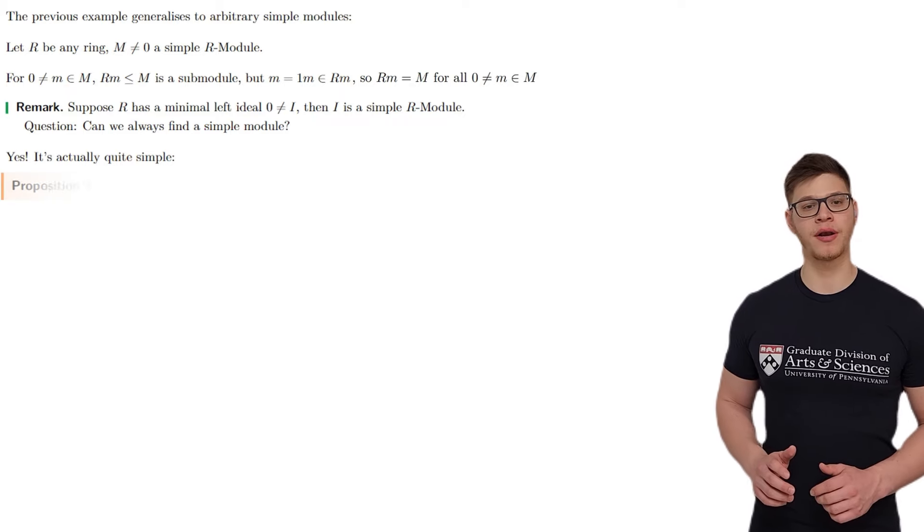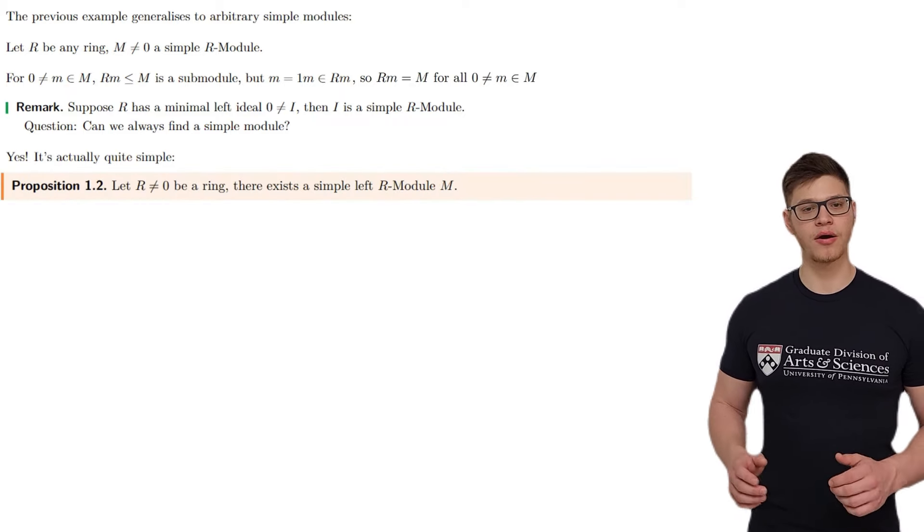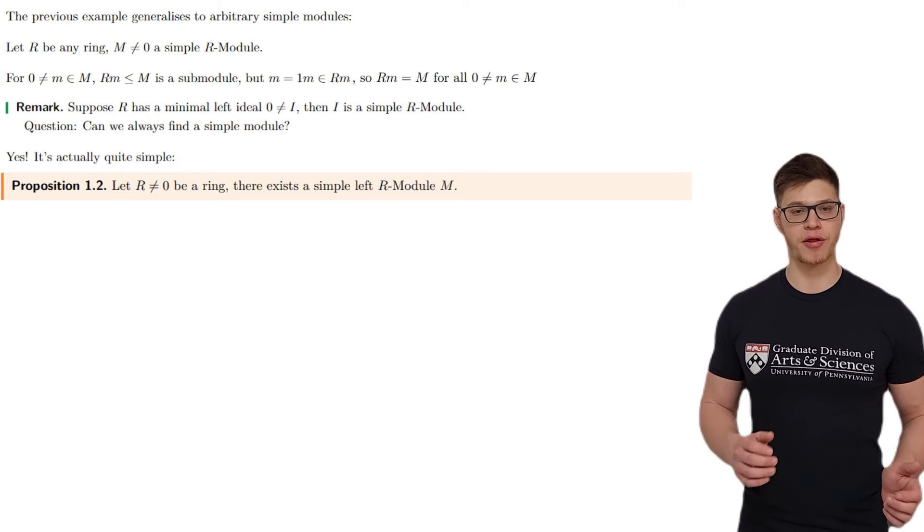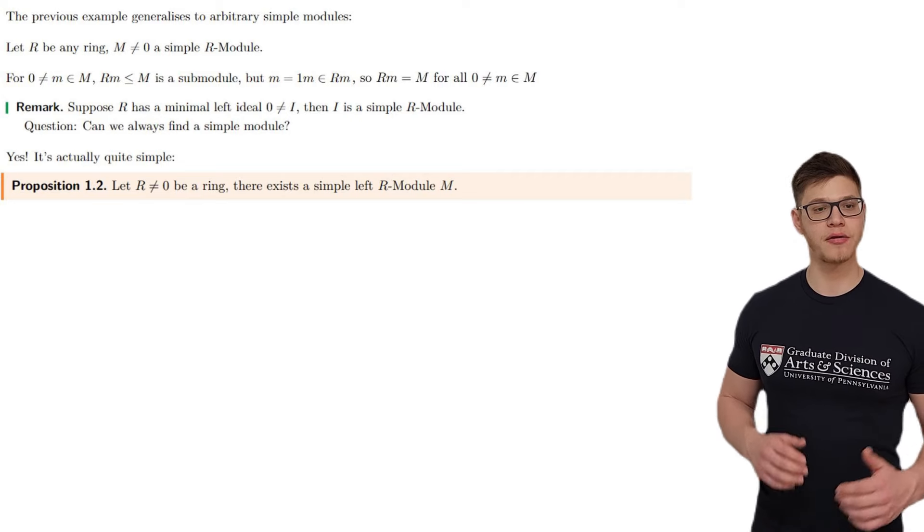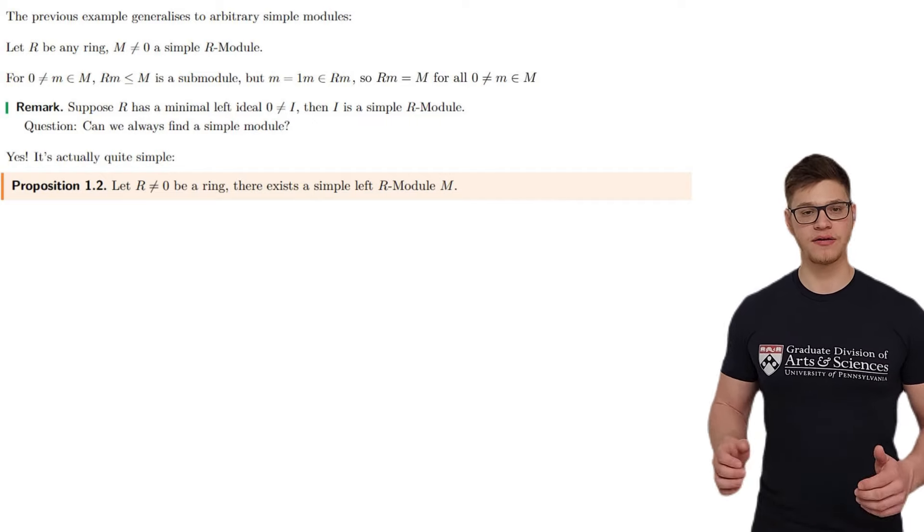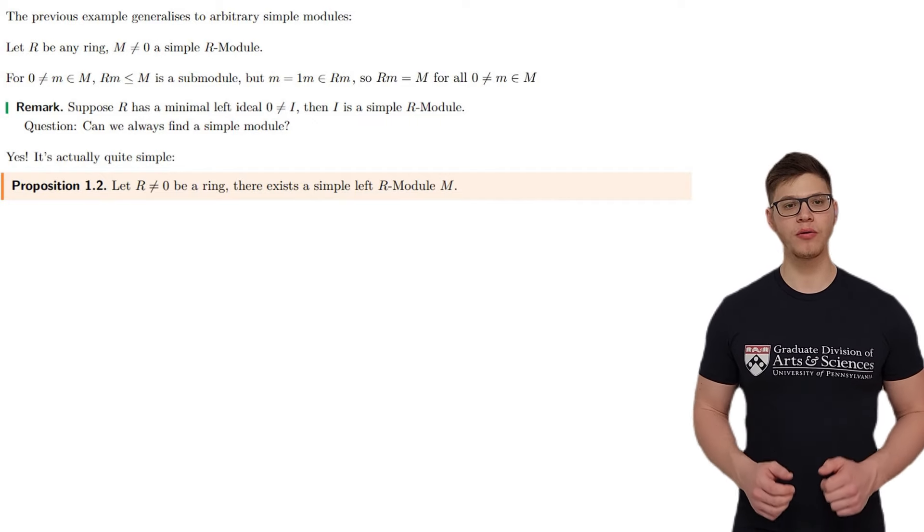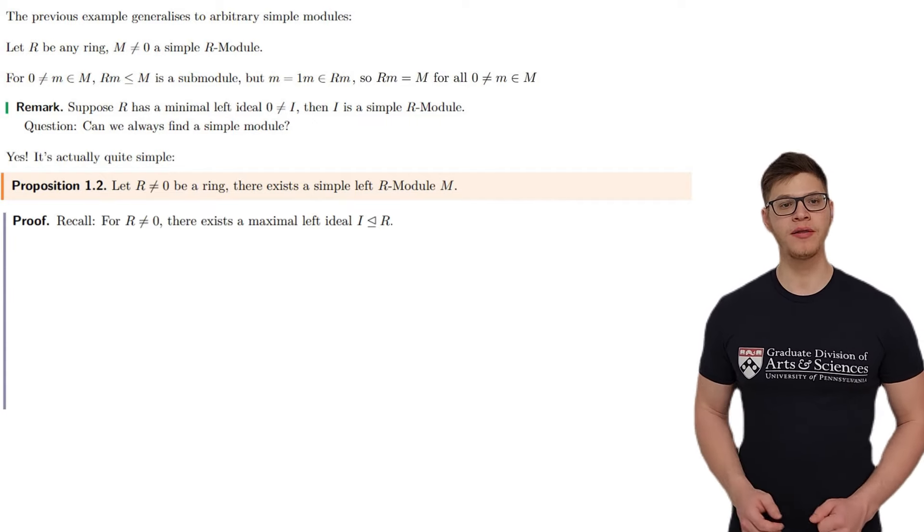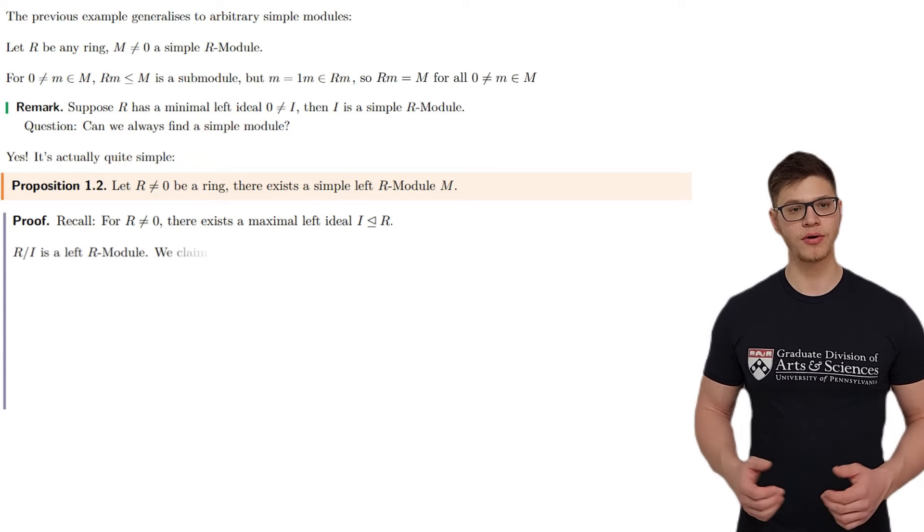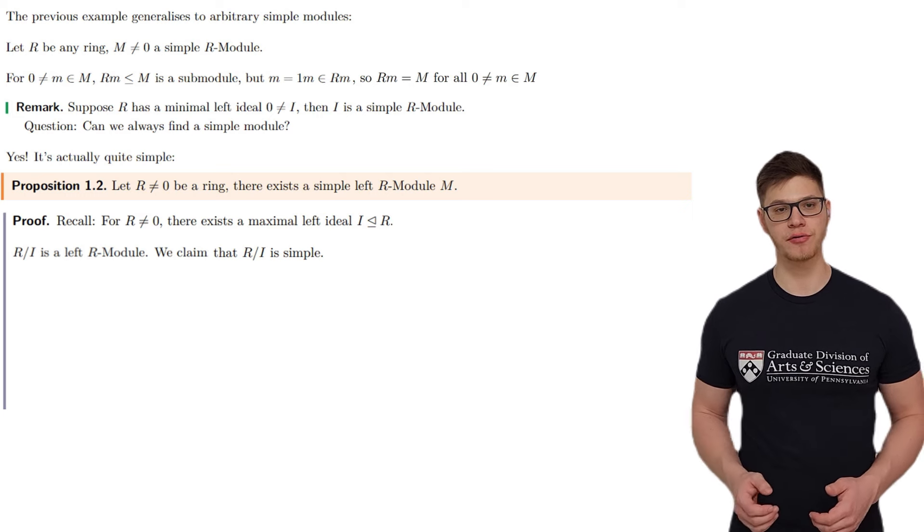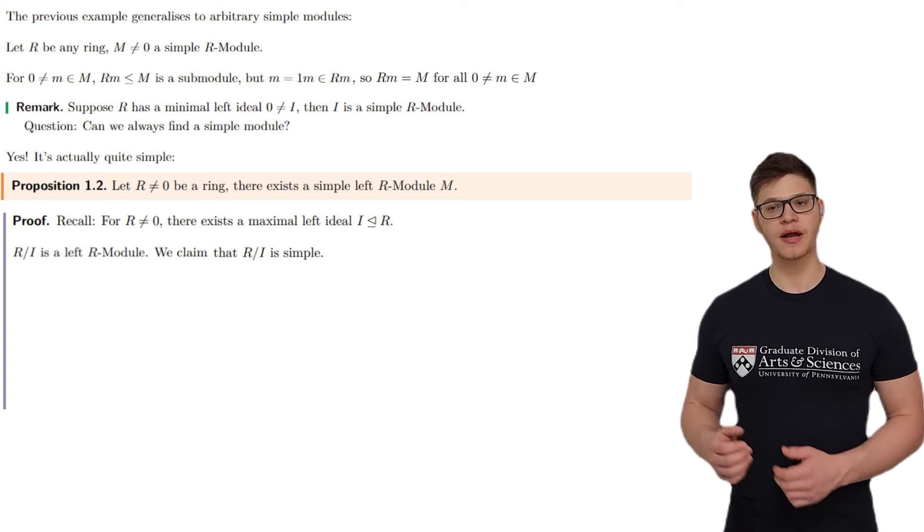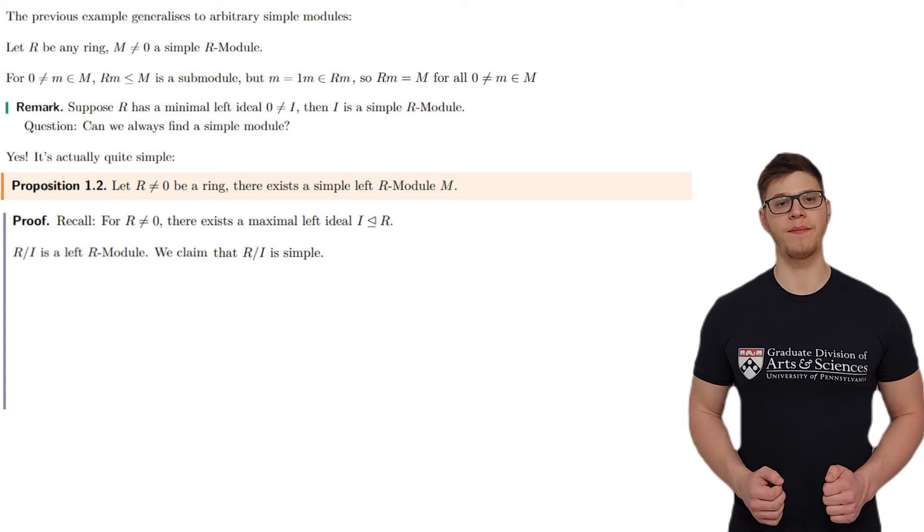So, we state the following proposition. For a non-zero ring R, there exists a simple left R-module M. Of course, as stated in the beginning, all arguments here apply analogously if we replace every instance of left with right, and vice versa. Recall that for any non-zero ring, there is a maximal left ideal, which we will call I. The quotient R mod I then has an R-module structure, a left R-module structure, in the natural way.